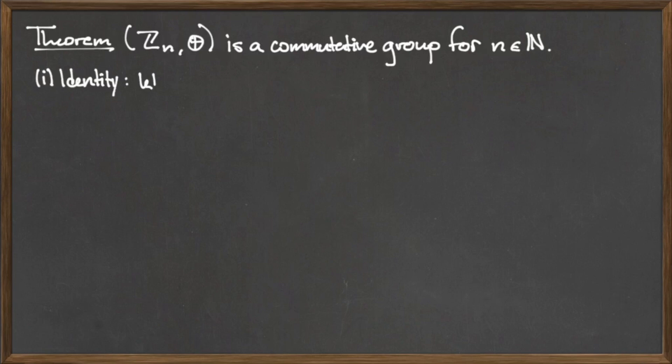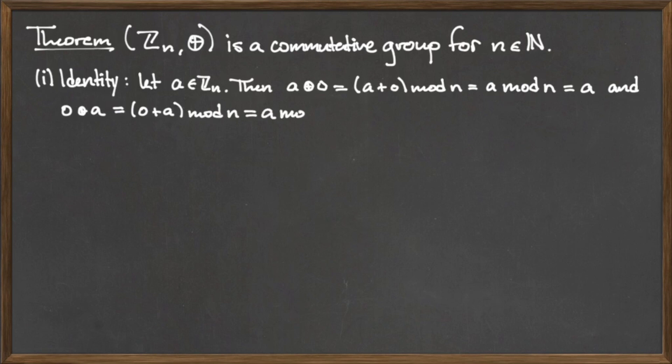To show that the set of integers mod n under the binary operation ⊕ is a commutative group, we need to show that it satisfies the identity, inverse, associative, and commutative requirements.